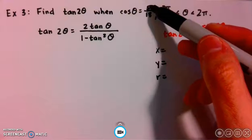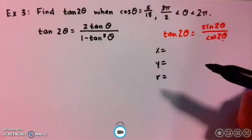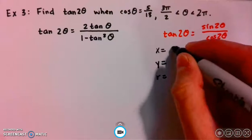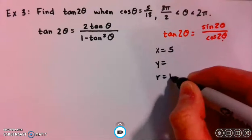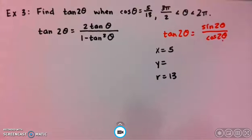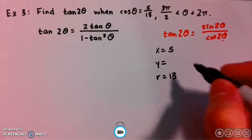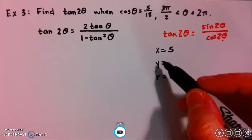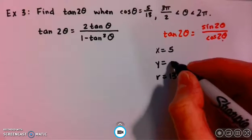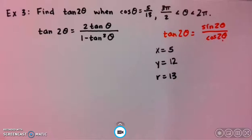So cosine, again, is x over r. So we have x equals 5 and r equals 13. We know this is a special triangle of 5, 12, 13. We just need to figure out if y is going to be positive or negative, so let me put 12 in there as a placeholder.